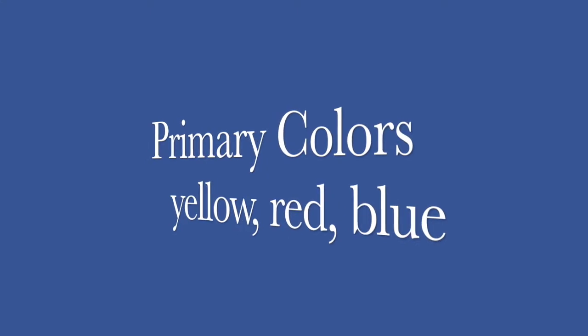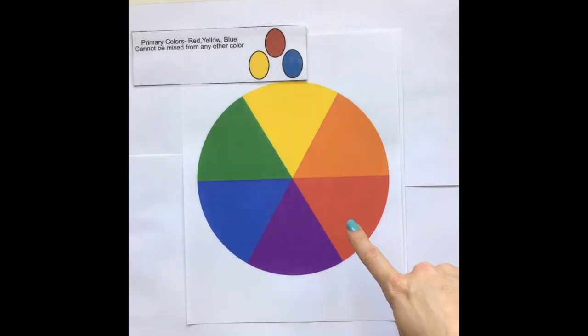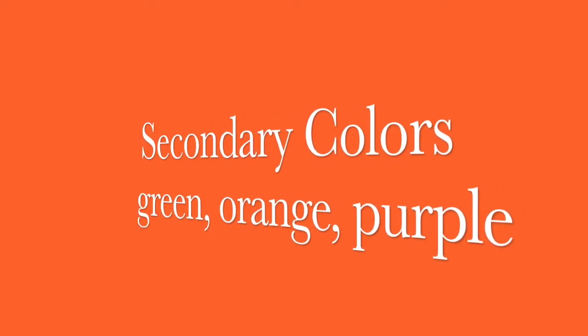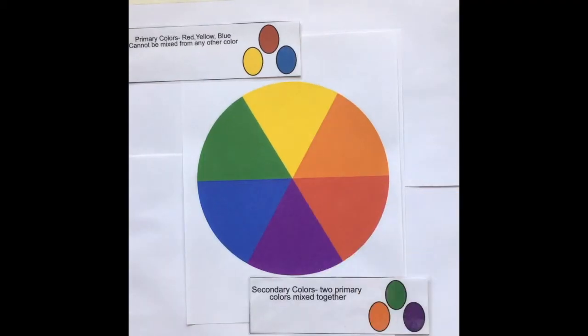Color, the natural appearance of something. Primary colors are yellow, red and blue. Secondary colors are green, orange and purple.